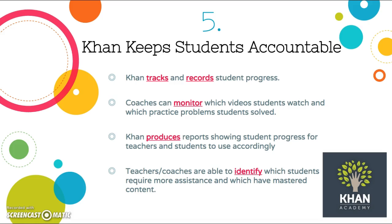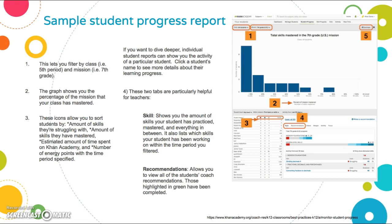Looking at accountability, Khan Academy allows students to track and record their progress. Coaches can see which videos students watched, for how long, and which exercise problems they practiced. Khan produces a report showing student progress where teachers and students can discuss or review what needs to be covered again. This allows students to identify what topics they need to master and go back and review. It's helpful for students to see the organization of the topics they've covered and what they need to revisit.